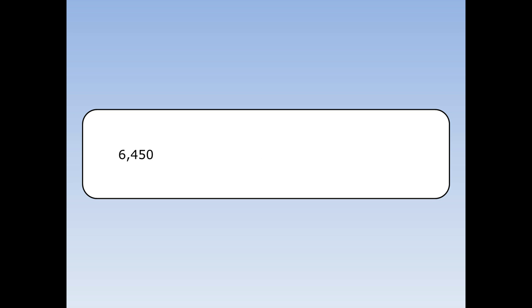Six thousand four hundred and fifty. I can't choose six hundred and forty-five, because that's bigger than ten. I can't choose sixty-four point five, because that's bigger than ten. The number I need to choose is six point four five times a thousand. That's equal to six point four five times ten cubed. Six point four five is between one and ten, times ten to the something — this is standard form.